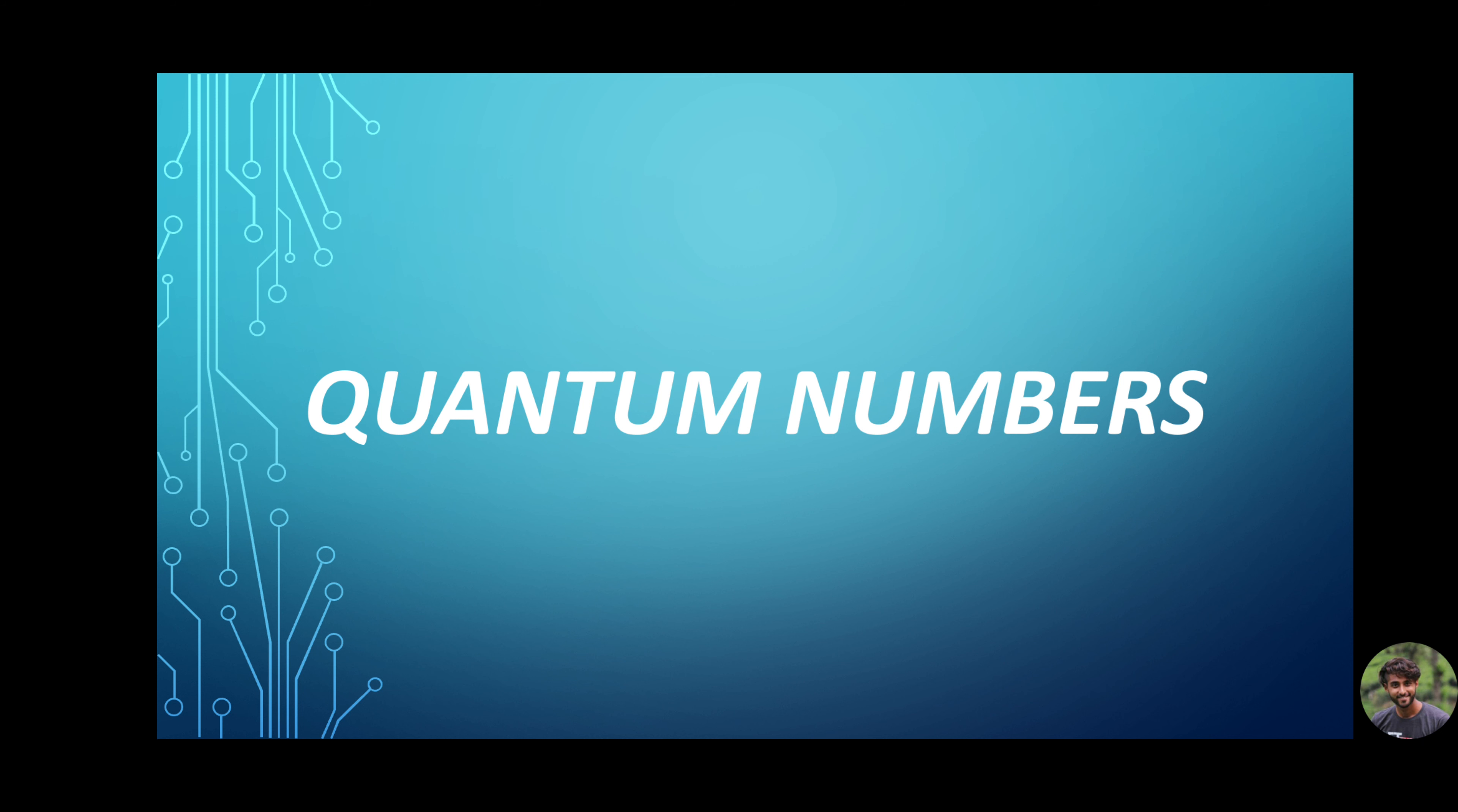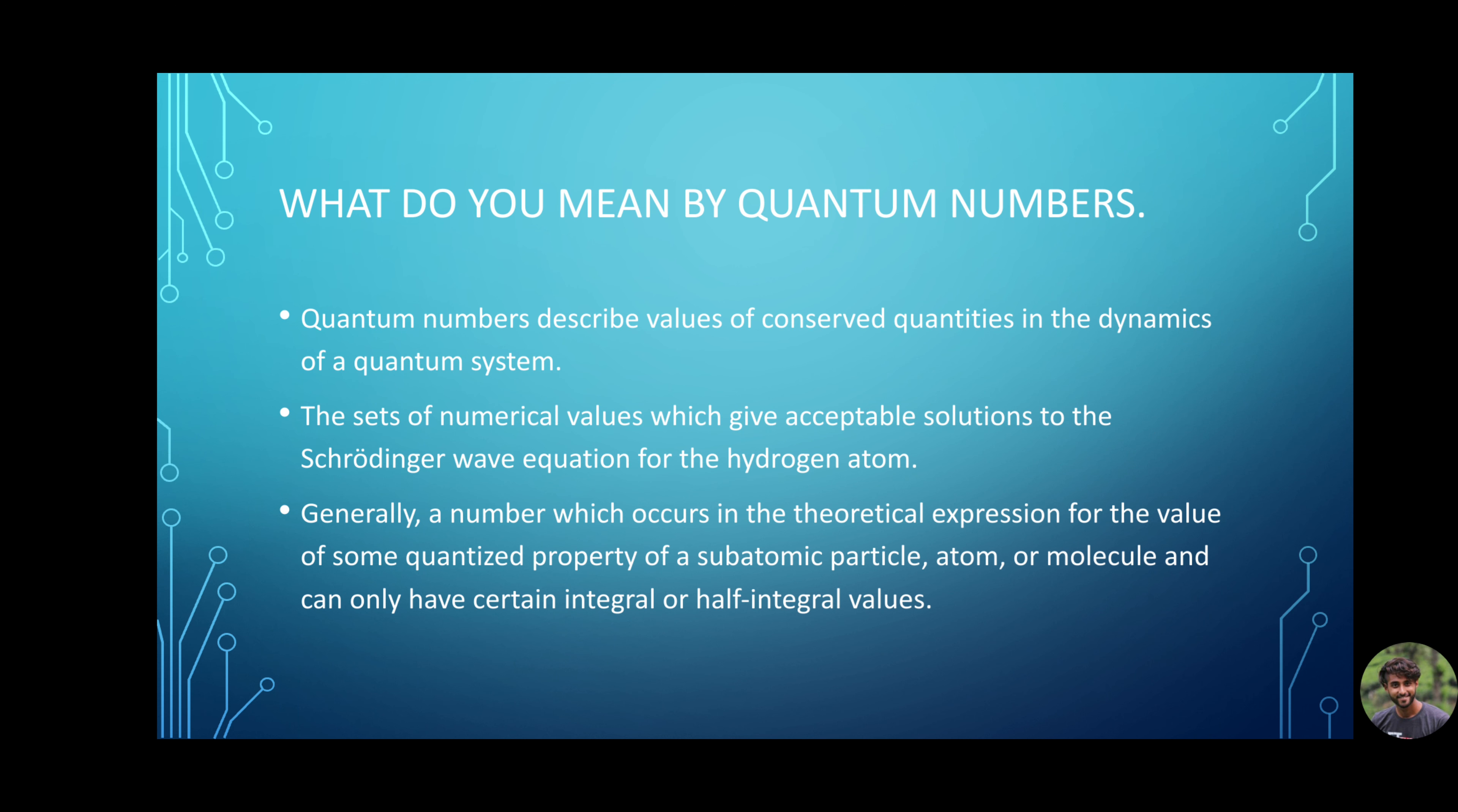Today, we will be talking about the quantum numbers. First, what do you mean by quantum number? To simply put it, quantum numbers describe the properties of elementary particles. Or, quantum numbers describe values of conserved quantities in the dynamics of a quantum system.